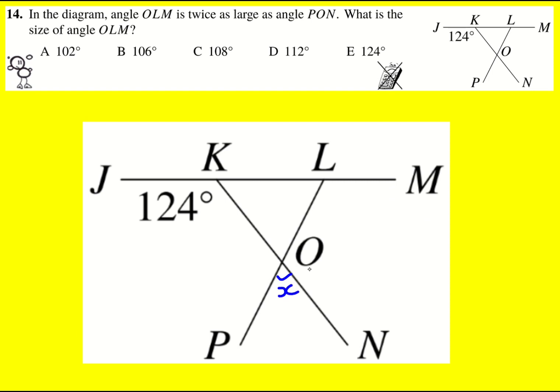So I'm going to call this X, and then I'm told that angle OLM, which is this one here, is twice that. So I'm going to call that 2X. Then I'm going to try and find anything else that I can in terms of X. We're actually trying to find the angle OLM, so we want to know what X is.